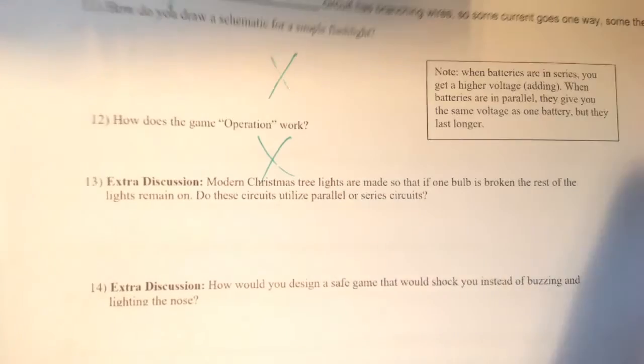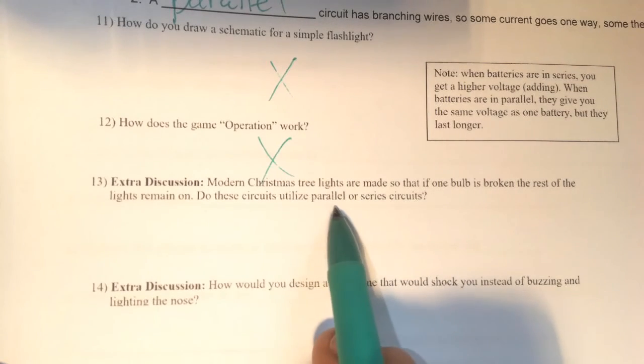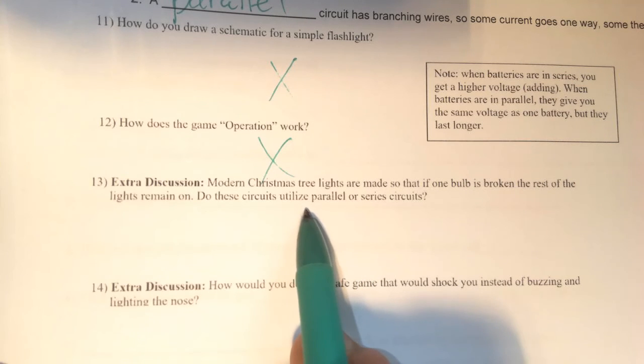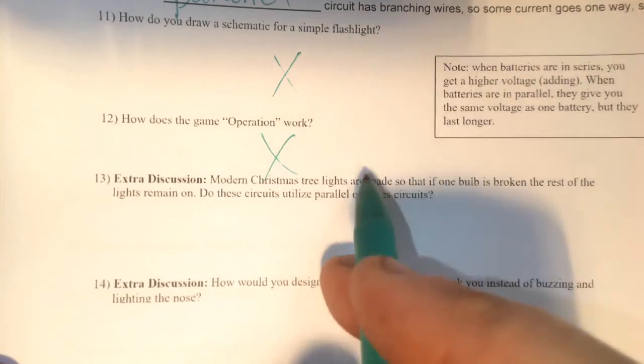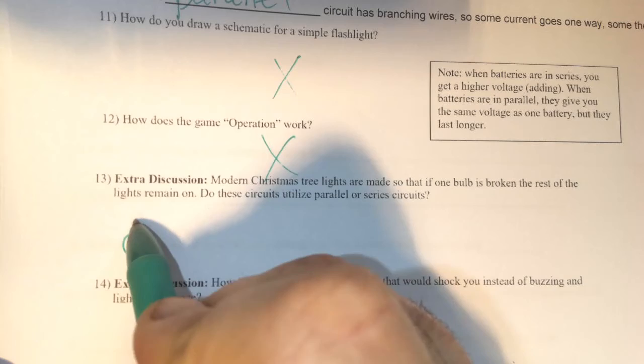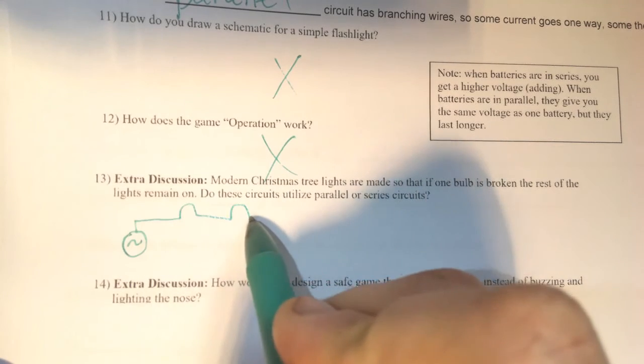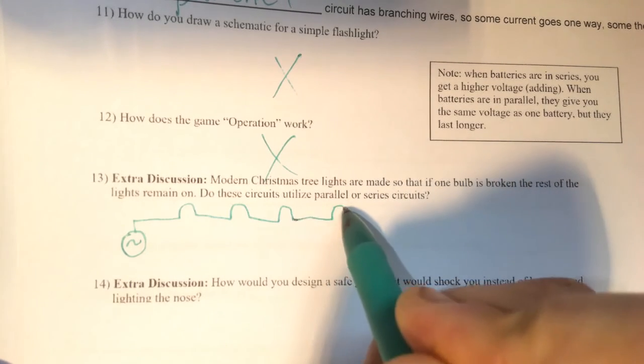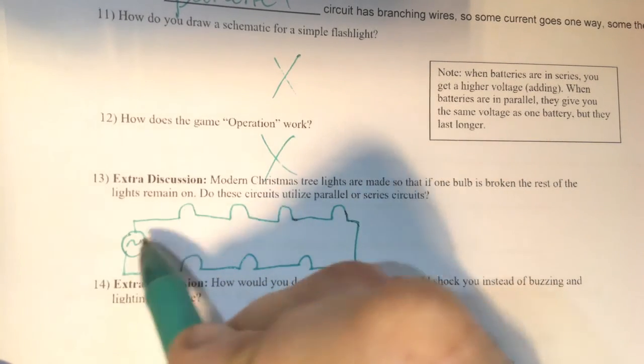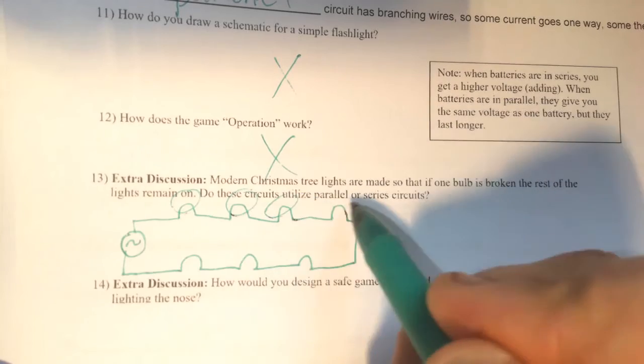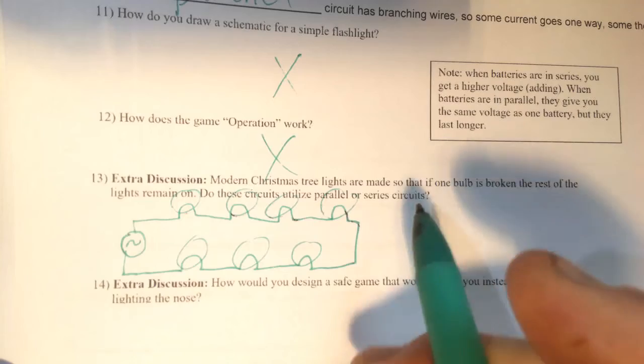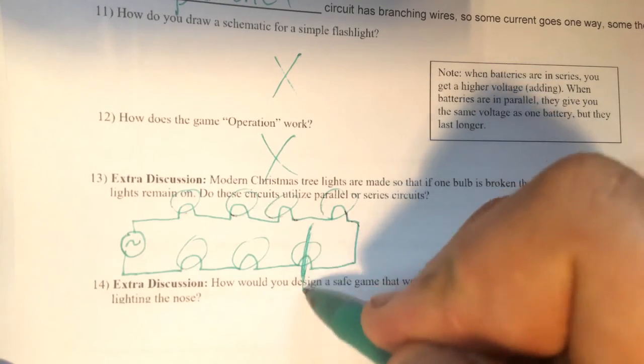Number 13. Modern Christmas tree lights are made so that if one bulb is broken, the rest of the lights remain on. Do these utilize a parallel or a series circuit? Well, if we had a series circuit, we would have something like this. And these are all the light bulbs, one after the other. The current has to flow through every light bulb. If we have a break in one of them, then there is going to be an open gap and the charges are not going to be able to jump across that. And so all the current stops, and none of the light bulbs are going to turn on.